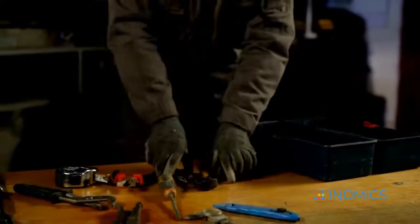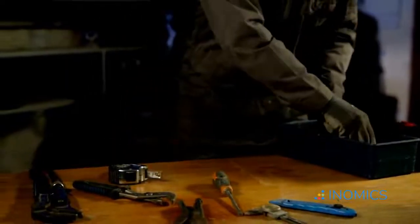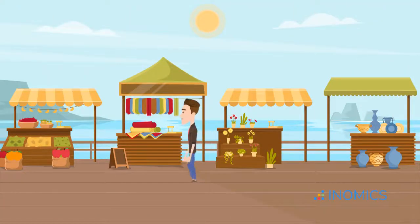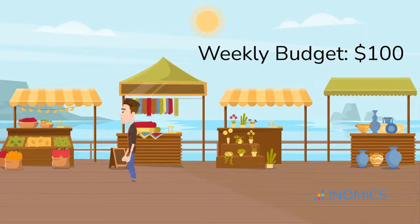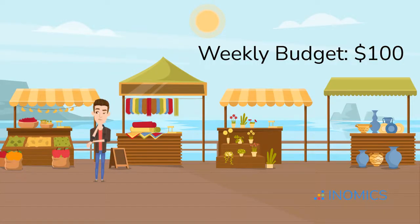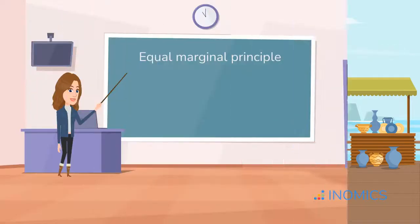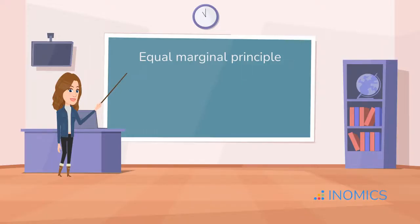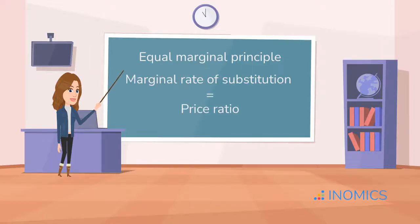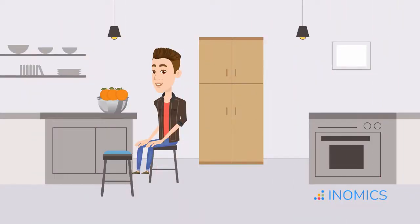Let's get into the heart of consumer theory: utility maximization. Imagine a student named Alex with a weekly budget of $100 to spend on oranges and apples. If Alex is getting more utility per dollar from oranges than apples, they should shift spending toward oranges until the utility per dollar is equal across both goods. This is known as the equal marginal principle, and it's where the marginal rate of substitution — MRS — equals the price ratio. At this point, Alex has optimized their consumption, and any further reallocation would actually lower their utility.